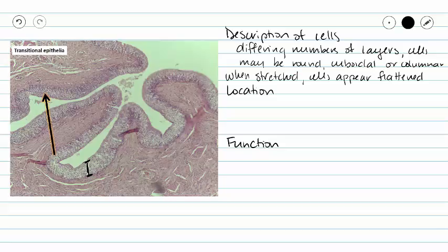I've already named a couple of different locations for our transitional epithelium. One of those was a ureter. A ureter is going to convey urine from our kidney down to our urinary bladder.